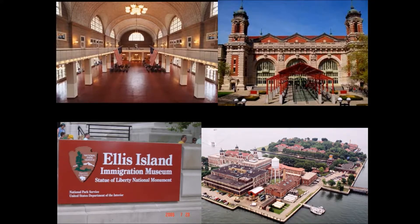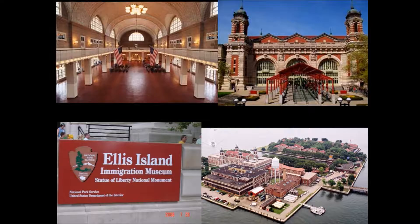A strange story about Ellis Island: when you came through, you were often robbed of your heritage in a way. If your name was hard to pronounce for an American tongue — say you're Greek with a name like Oligopoulos — they might look at you and say, 'Now your name is Alex' or change your last name entirely. That was actually a fairly common practice back in the day.